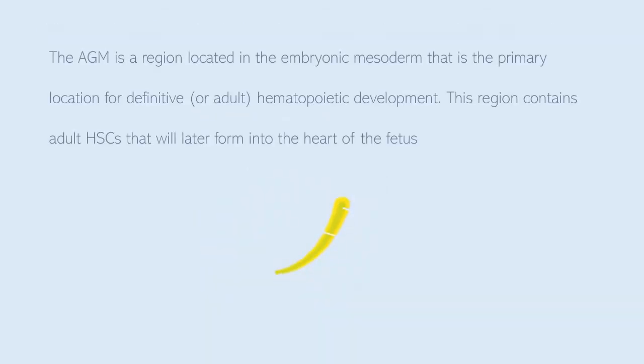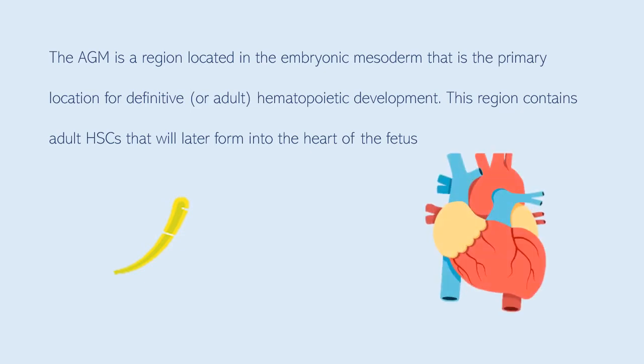The AGM is a region located in the embryonic mesoderm. It is the primary location for definitive, or sometimes called adult, hematopoietic development. This region contains adult hematopoietic cells that will later form into the heart of the fetus.